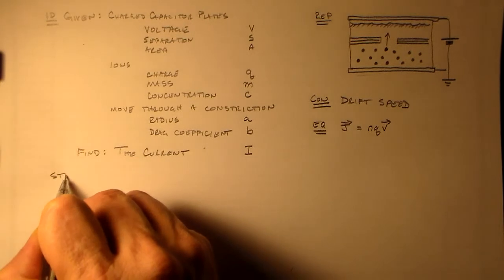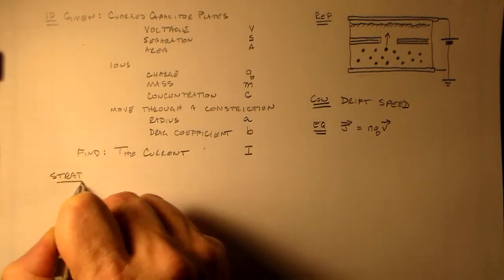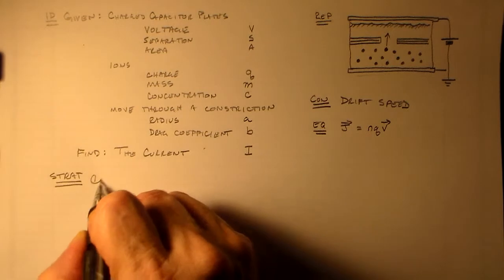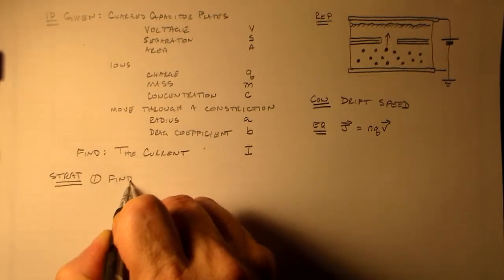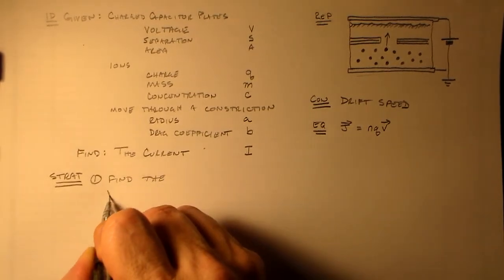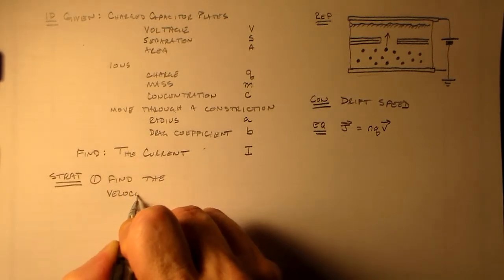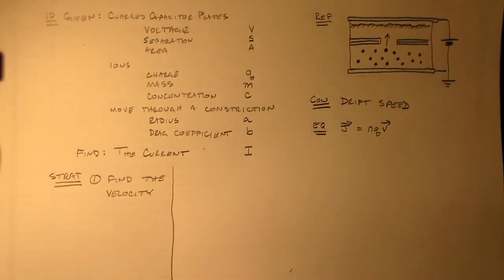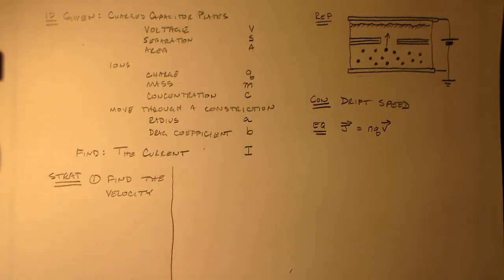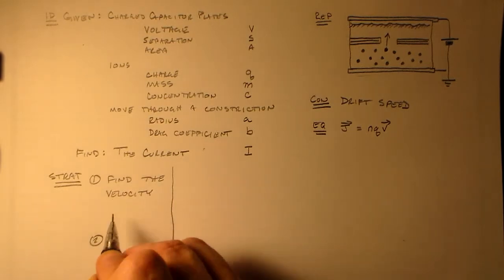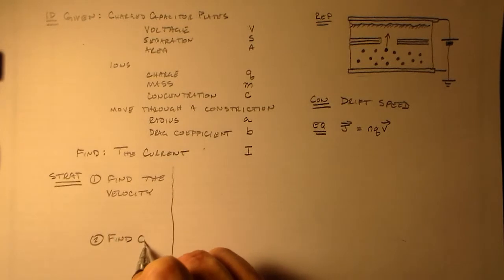So, we need a strategy. The first one will be to find the velocity, find the speed. I think the speed is most important. And after we find the speed, using this, then we will find the current density.